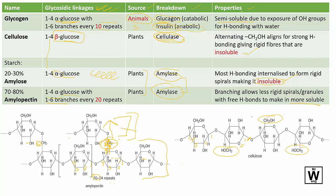Key things to memorize: the type of glycosidic linkage, whether the glucose is alpha or beta, whether it's 1→4 only or also has 1→6 linkages, and whether branching occurs every 10 or every 20 repeats.